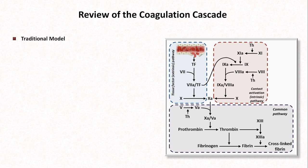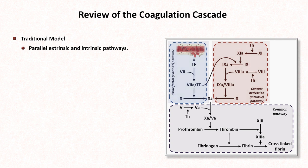The traditional model of this cascade is one that's in most introductory physiology texts, all board review books, and which is taught in most medical and nursing schools. This model focuses on the dichotomy of the parallel, so-called extrinsic and intrinsic pathways, which feed into a common pathway where thrombin is activated and fibrin cross-linked.